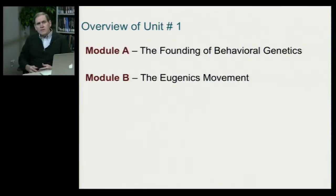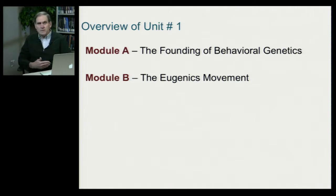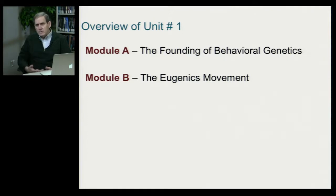First of all, rather than just telling you about where the science is today, one of the things I like to do is place it in an historical context. I think in doing that, what students begin to learn about is that science doesn't progress in some nice, linear, monotonic way, but we have fits and starts, and we sometimes regress. By looking at the historical context of behavioral genetics, you'll get a better understanding of how the field has evolved over the last 100 years and how we came to be where we are today.